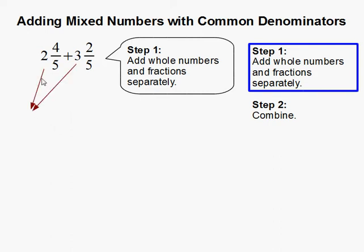So I'm going to separate the whole numbers, 2 and 3, and then the fractions, 4 fifths plus 2 fifths.